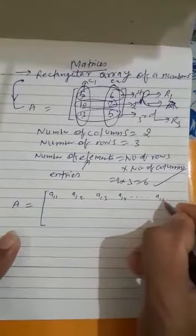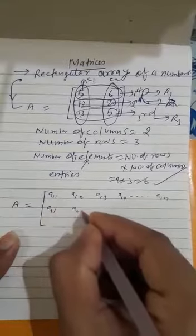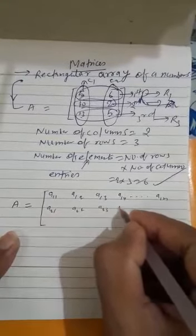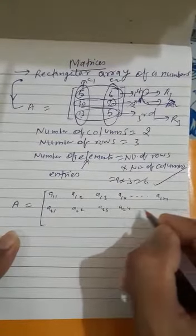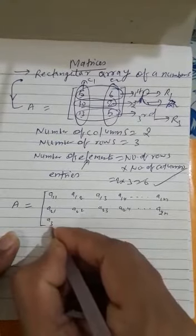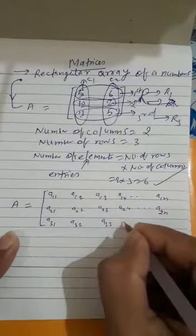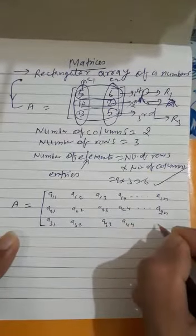a21, a22, a23, a24, dot dot dot a2n. Again we have to write a31, a32, a33, a44, dot dot dot.